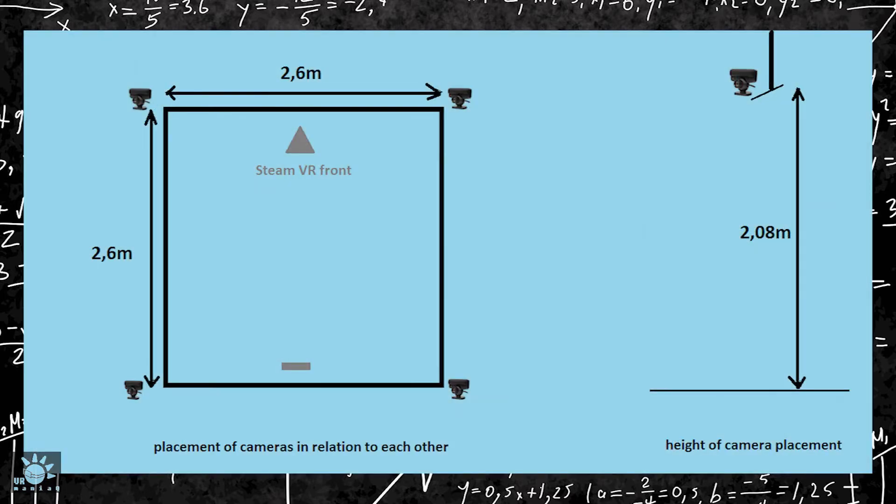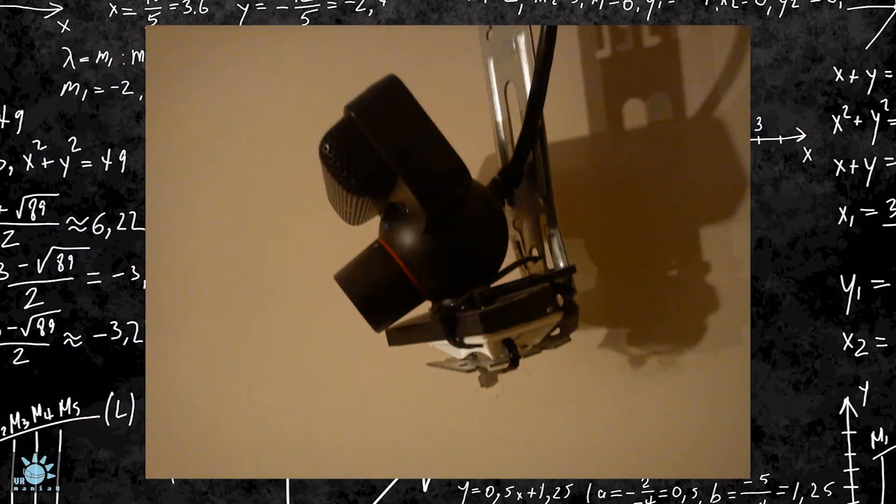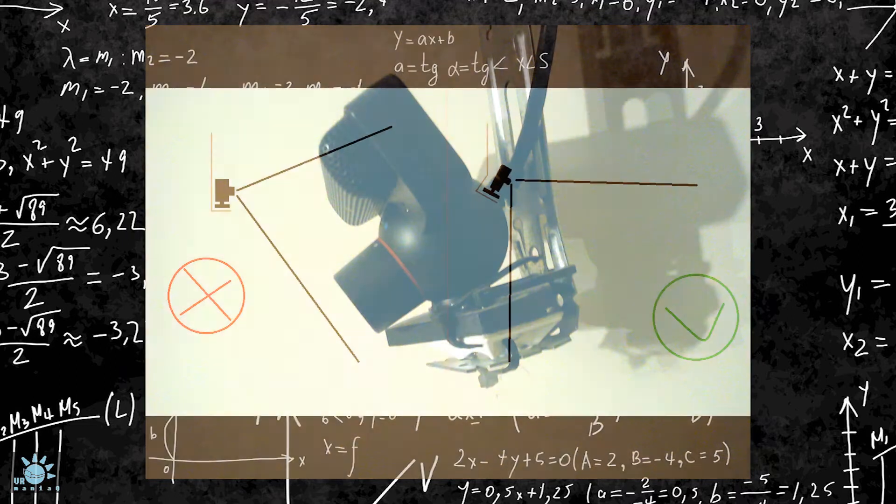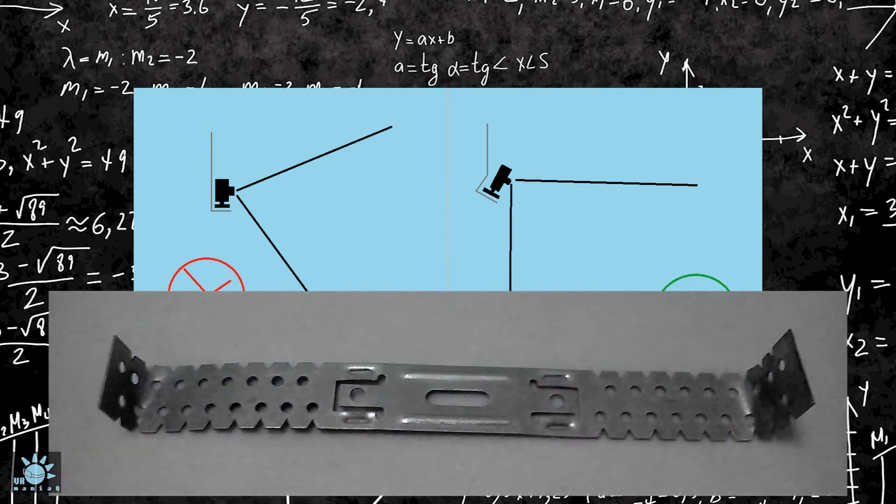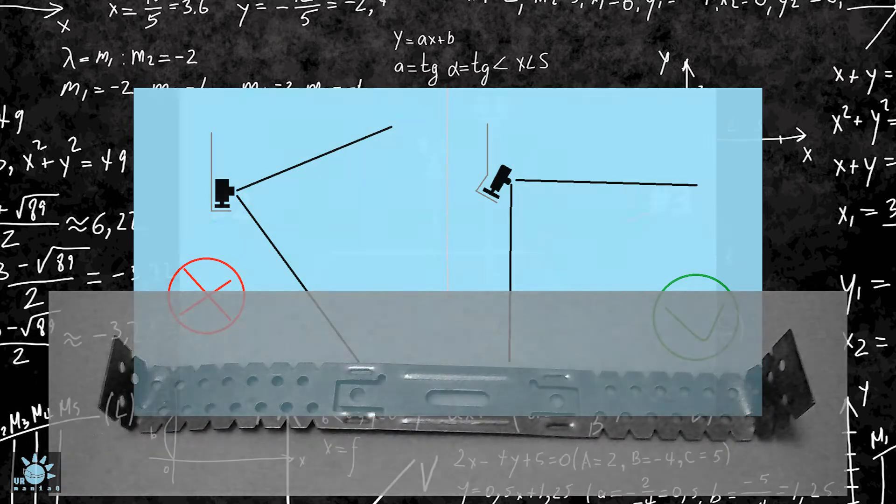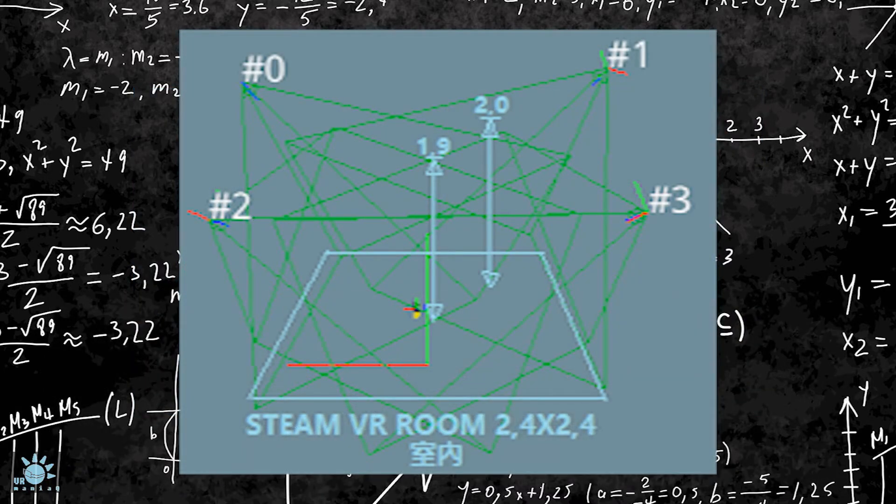After many combinations and experiments I got these results. Cameras looking down should look a little lower. To achieve this I use metal handles. They are flexible which help in regulation.